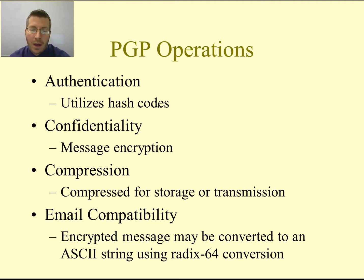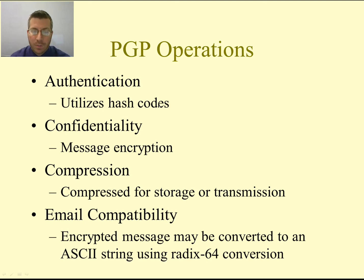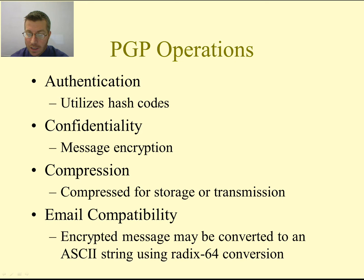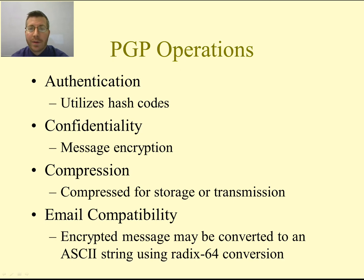For authentication, it will utilize hash codes. For confidentiality, we use encryption. For compression, we are hopefully familiar with some compression algorithms like ZIP, RAR, GZIP, and TAR. For email compatibility, encrypted messages can be converted to ASCII strings because that is what email uses. We have talked about authentication and confidentiality before when we were discussing our encryption algorithms, and PGP utilizes both encryption and hash codes.